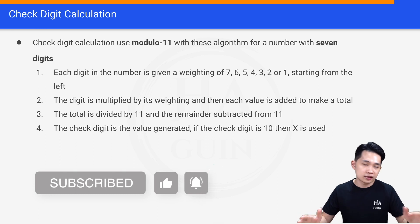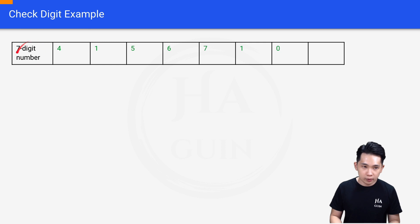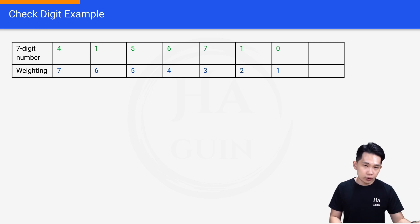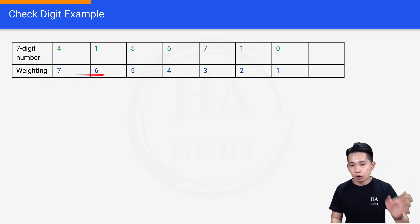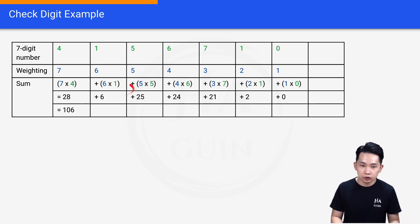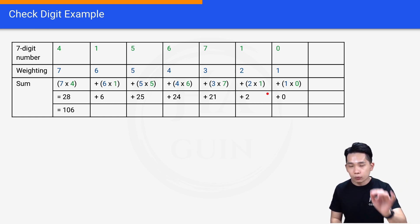The result of that subtraction is the check digit. If the check digit is 10, then X is used. Let's go through a practical example together. We have this random seven-digit number: 4, 1, 5, 6, 7, 1, 0, with an empty space for the check digit. The weightings go from seven down to one. We multiply each digit by its weighting: four times seven, one times six, and so on.